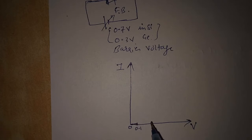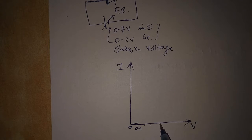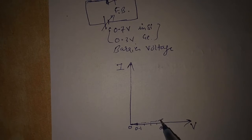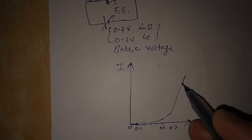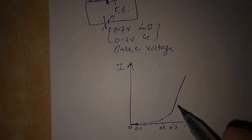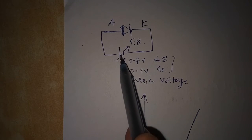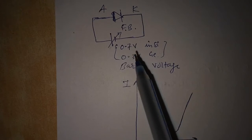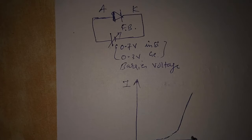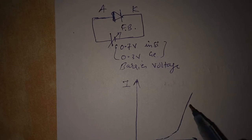As we increase the voltage from 0 through 0.1, 0.2, 0.3, 0.4, 0.5 volts, the current increases like this and starts rising exponentially. At 0.7 volts there is a sudden rise in current due to the overcoming of the potential barrier. Once we increase the voltage above 0.7 volts, the diode shows negligible resistance, so from 0.7 to 0.71 volts there is a large increase in current. This is the characteristic we get in forward bias.